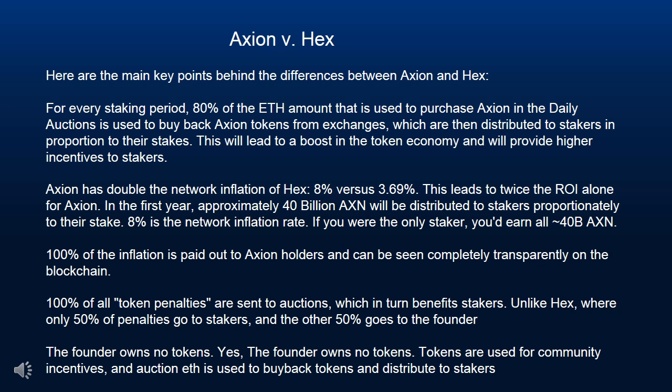Unlike HEX, where only 50% of penalties go to stakers and the other 50% goes to the founder — the Axion founder owns no tokens. Yes, the founder owns no tokens. Tokens are used for community incentives, and auction ETH is used to buy back tokens and distribute to stakers.